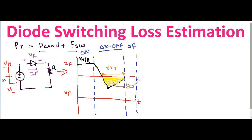This charge is called QRR — the reverse recovery charge. During the on-to-off transition you have the reverse recovery time TRR and the stored charge QRR. The current flowing through the diode in the off period then goes to zero. This on-to-off transition also shows the reverse recovery current IRR, and the region beyond is your off time.